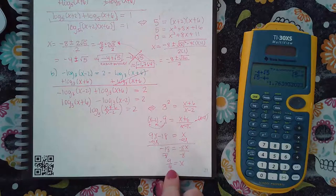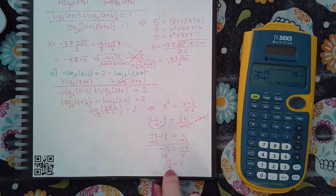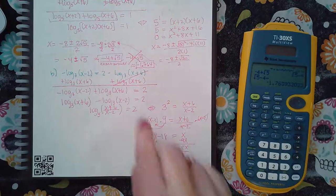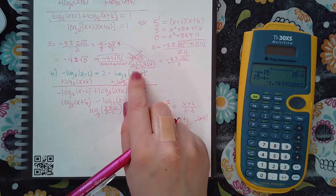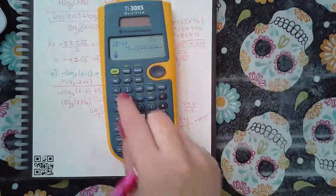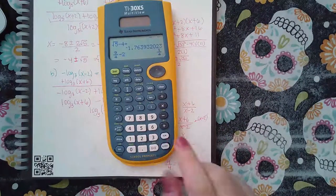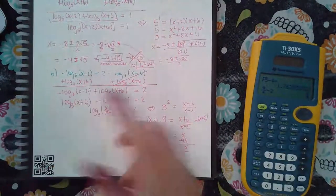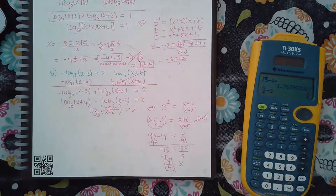Now before I box it or say that's my final answer, I need to make sure it doesn't make any of the arguments negative. Now this is a positive nine over four. So if I take a positive number plus six, it's just going to be a bigger positive. So it works in this argument. In this argument, I'm not sure. So let's see. Nine over four minus two. I get a positive one quarter. So it does check out into this argument as well. So I can box it and type that in and say that is my actual answer.